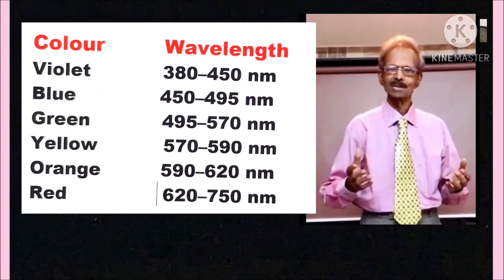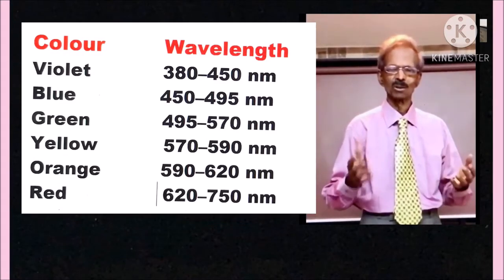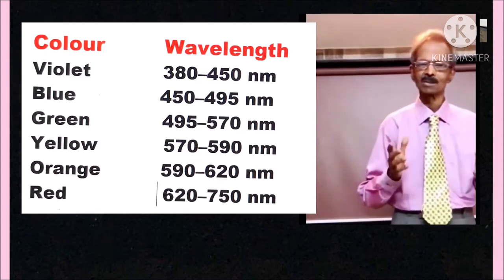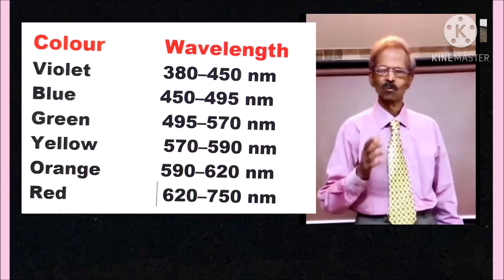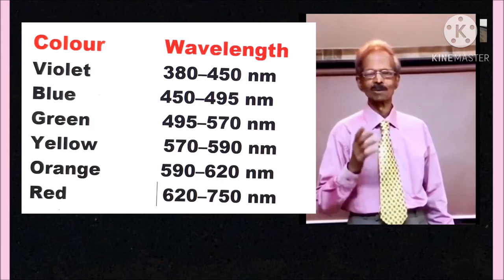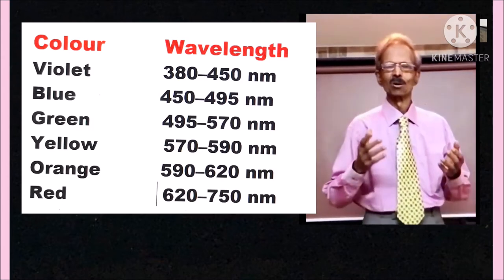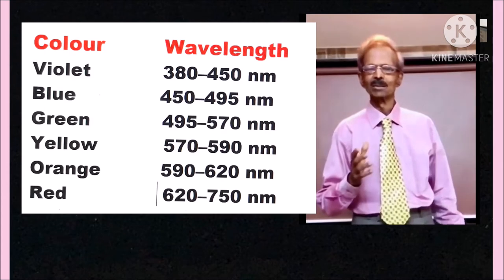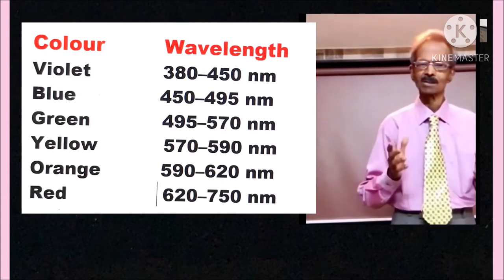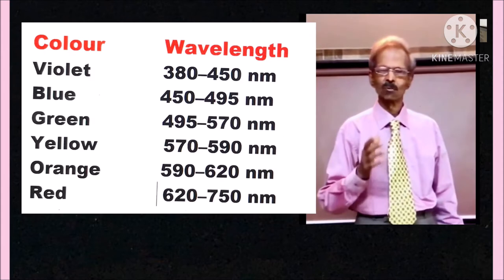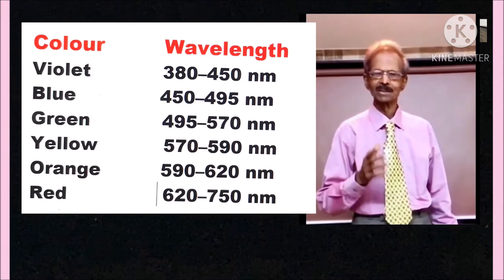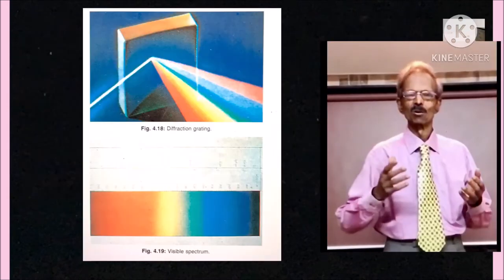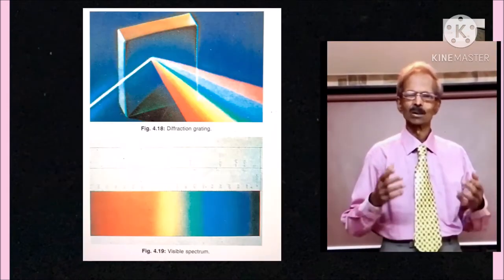Refer to this table: 380 to 450 nanometer represents violet color, 450 to 490 nanometers blue, 490 to 570 nanometers green, 570 to 590 nanometers yellow, 590 to 620 nanometers orange, and 620 to 750 nanometers red color.